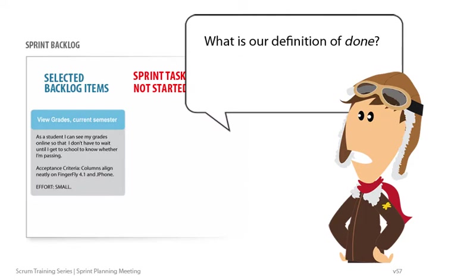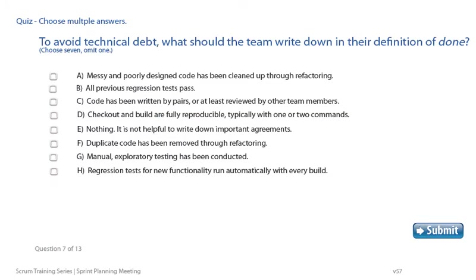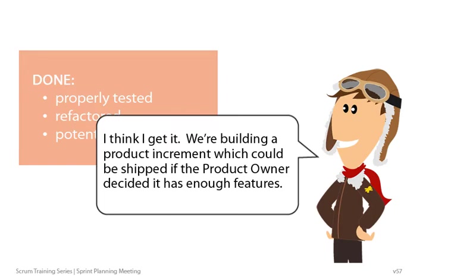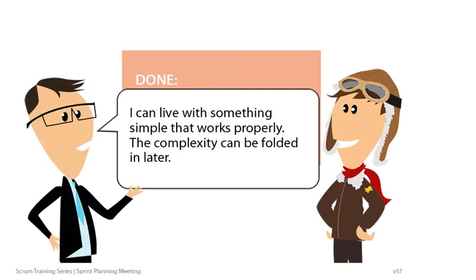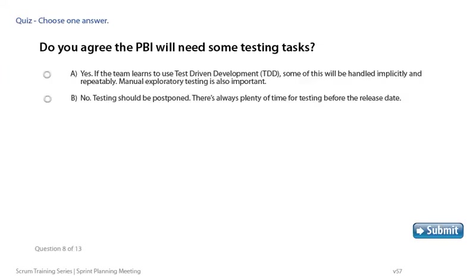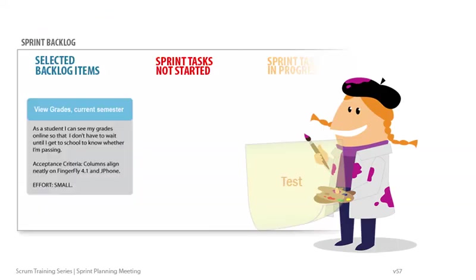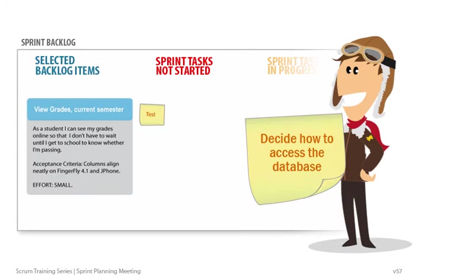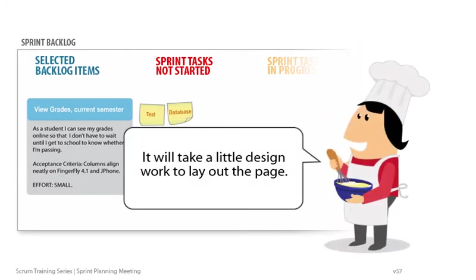What's our definition of done? Done is properly tested, refactored, and potentially shippable. I think I get it. We're building a product increment which could be shipped if the Product Owner decided it has enough features. I can live with something simple that works properly — the complexity can be folded in later. Does everyone agree that ViewGrade's current semester PBI will require some testing tasks? Also, we have to decide how to access the Grades database. It will take a little design work to lay out the page.